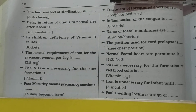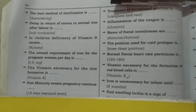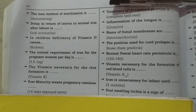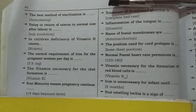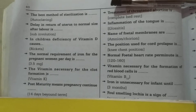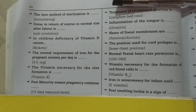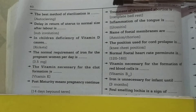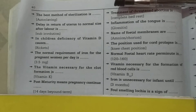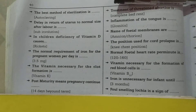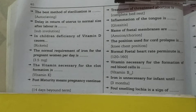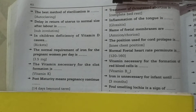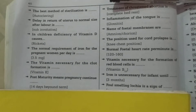Welcome to Mohan Punitha Nursing Academy. Today we discuss important questions. The best method of sterilization is autoclaving. Delay in return of uterus to normal size after labor is sub-involution.